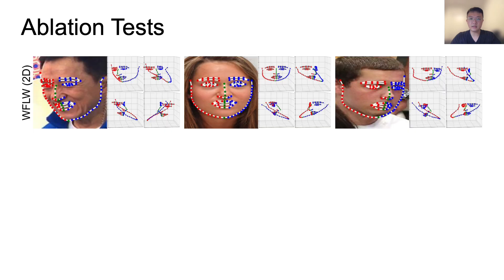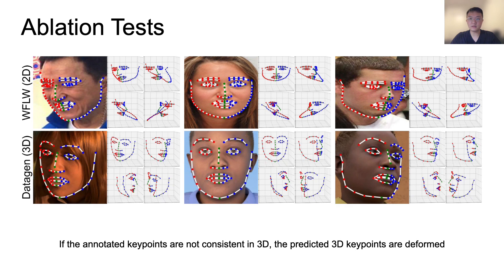We also notice that if the annotated keypoints themselves are not 3D consistent, the predicted 3D keypoints are also defective. This problem disappears if the keypoints are indeed 3D consistent.